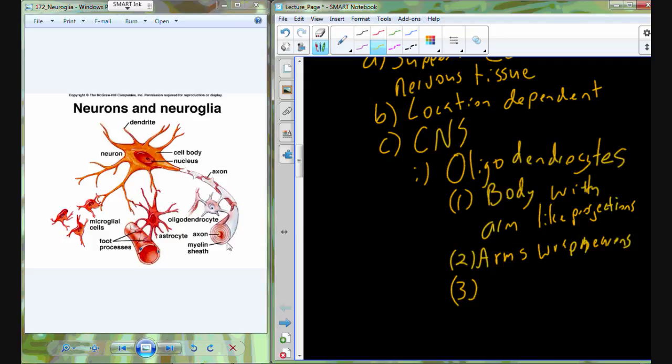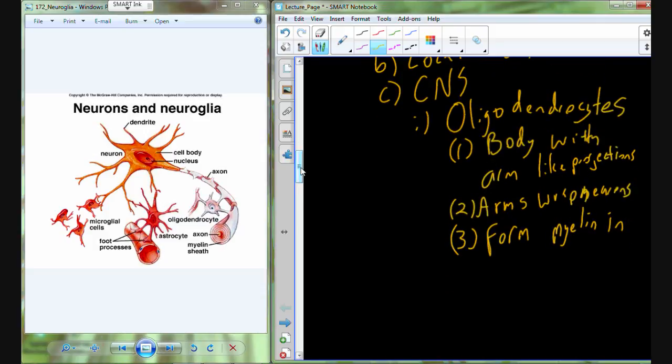This forms what's known as myelin. And specifically, since the oligodendrocytes are in the central nervous system, it's going to be the myelin that we find associated with neurons in the brain and in the spinal cord.